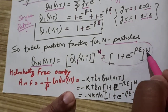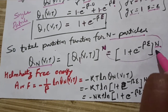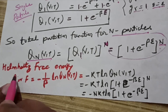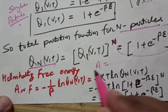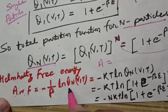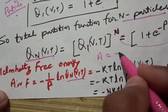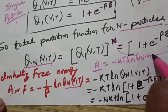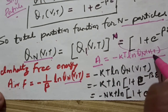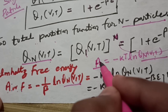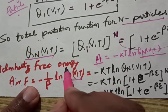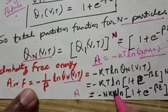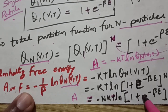Now that we have the partition function, we use the basic relationship between the partition function and Helmholtz free energy. The Helmholtz free energy A equals minus one over beta times ln Q(N,V,T). Substituting the value for N particles, A is equal to minus N k T times the natural log of (1 + e to the power minus epsilon over kT).